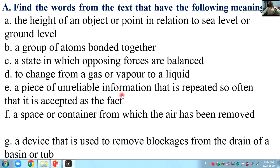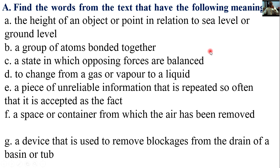In Unit 5 Science and Experiment, we are going to discuss the exercises of Unit 5. Find the words from the text that have the following meanings. The height of an object or point in relation to sea level or ground level — its meaning is altitude.